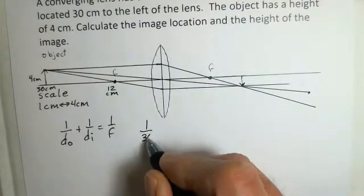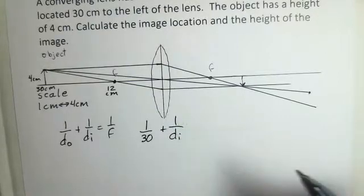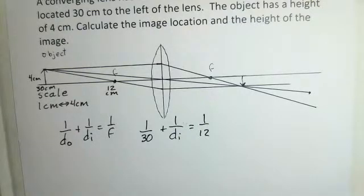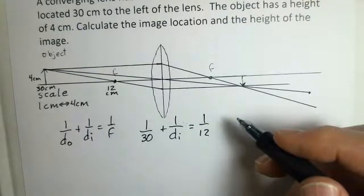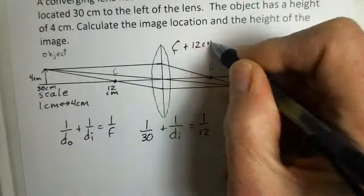One over 30. We're trying to calculate the image distance, so that's unknown. Then we had 12 centimeters for the focal length. It's a converging lens, so the focal length is a positive number.